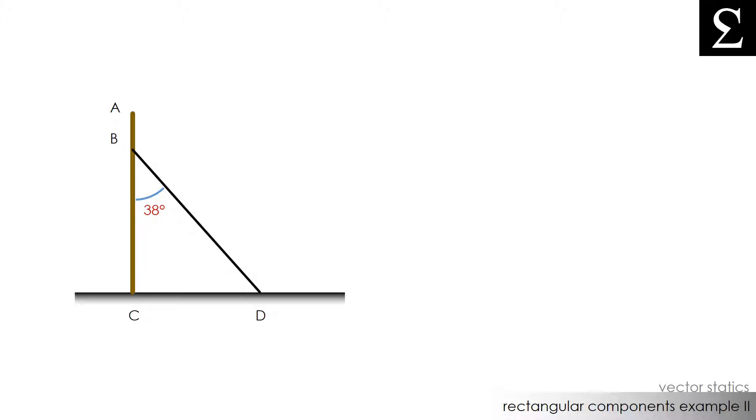We will call the force that runs through the wire force P, which is obviously a tension force. We also know that force P has a horizontal component that is directed perpendicular to the pole AC. This component has a value of 120 newtons. Our job here is to find the vertical component of force P and the magnitude of force P.